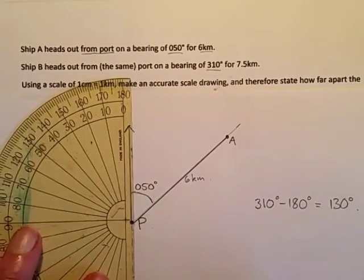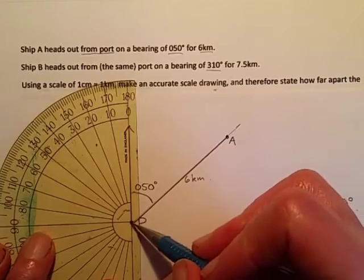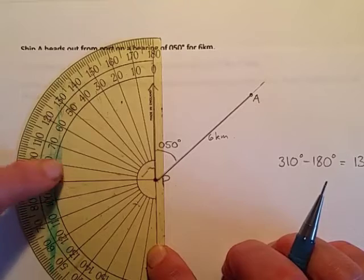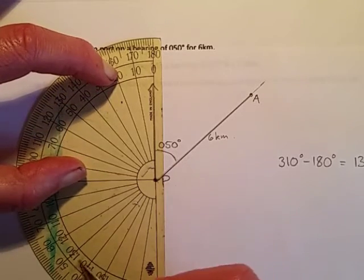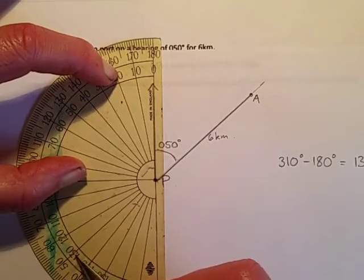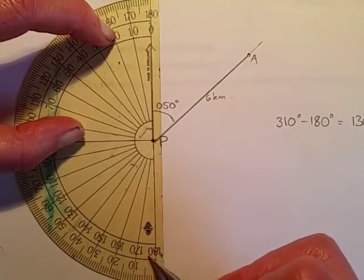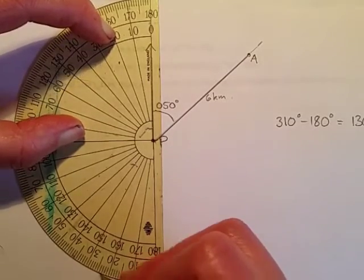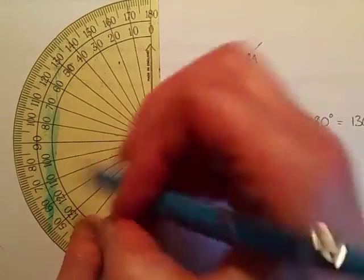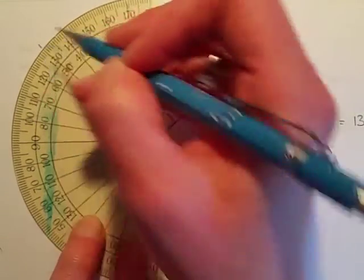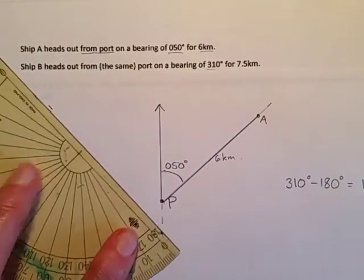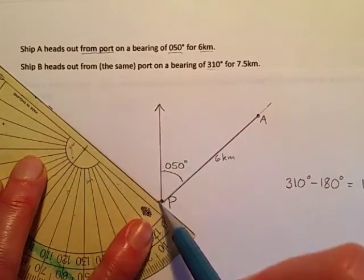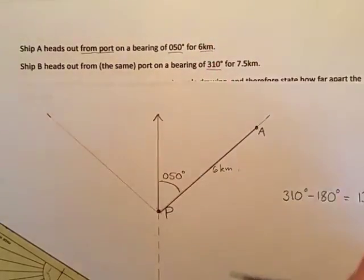So we'll line the protractor up there, centre of the protractor right on that port point where we measure our bearings from. We're going to make sure that we're using the right scale. So there's 130 there, but that's not the right one, is it? Because that would be us measuring from 180 down to 130. That's not the right one. We need to start at zero. So we're going to go 130 from that zero, which will take us up to there. If we join that together very faintly for now, that is the direction that ship B is going in.